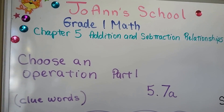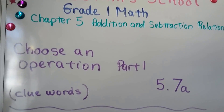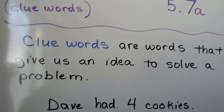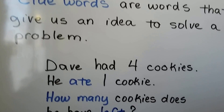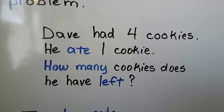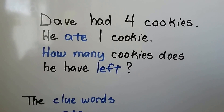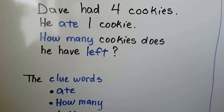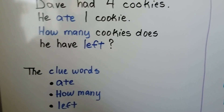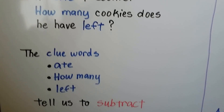Choose an operation, part one. This is about clue words, lesson 5.7A. Clue words are words that give us an idea to solve a problem. He had four cookies, he ate one cookie — how many cookies does he have left? The clue words 'ate,' 'how many,' and 'left' tell us what to do.